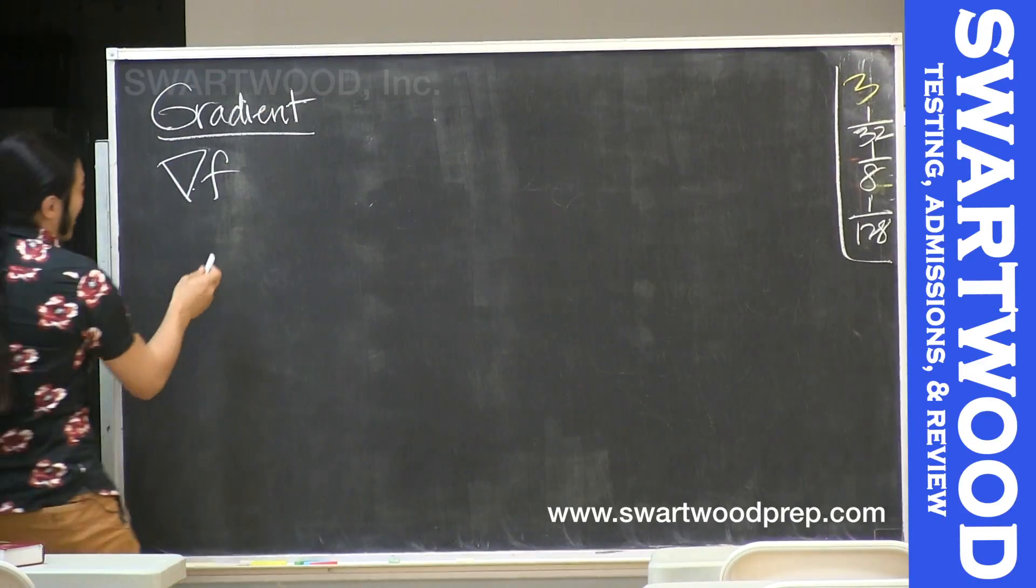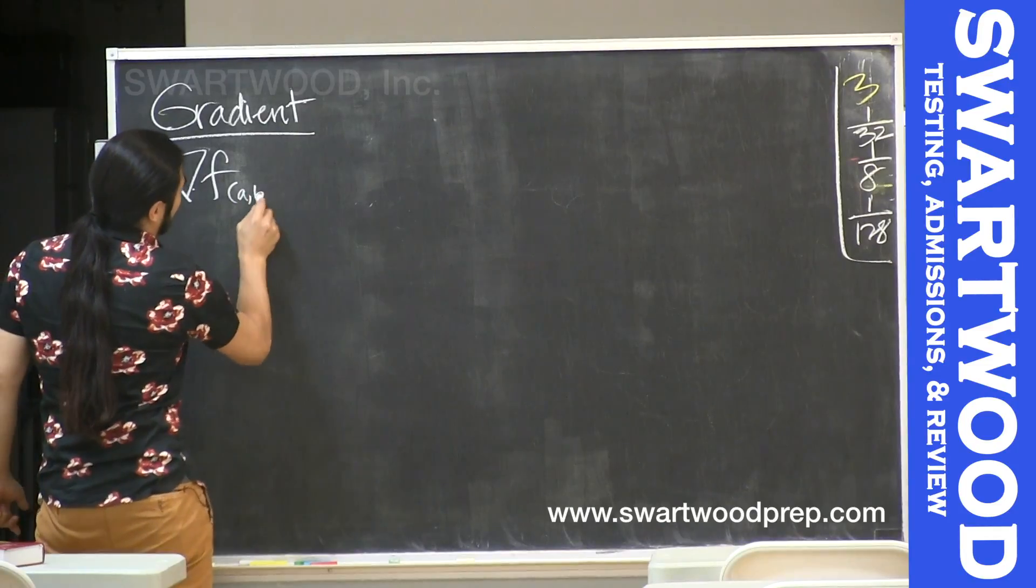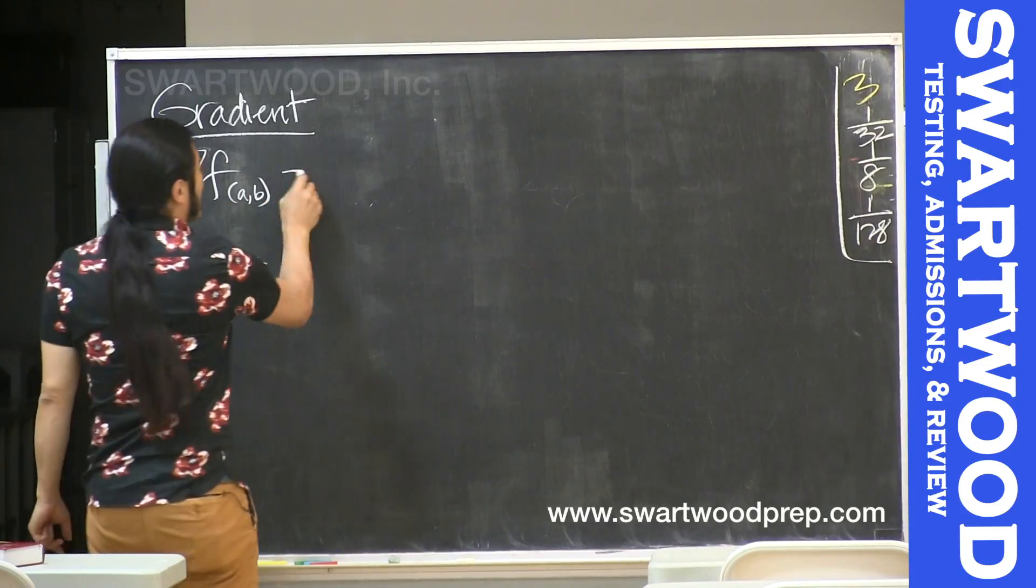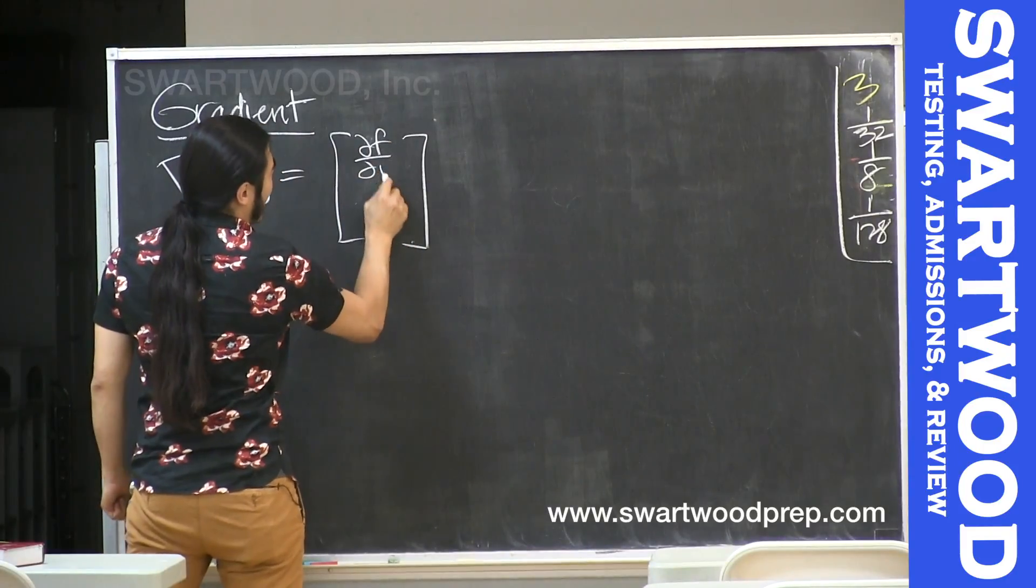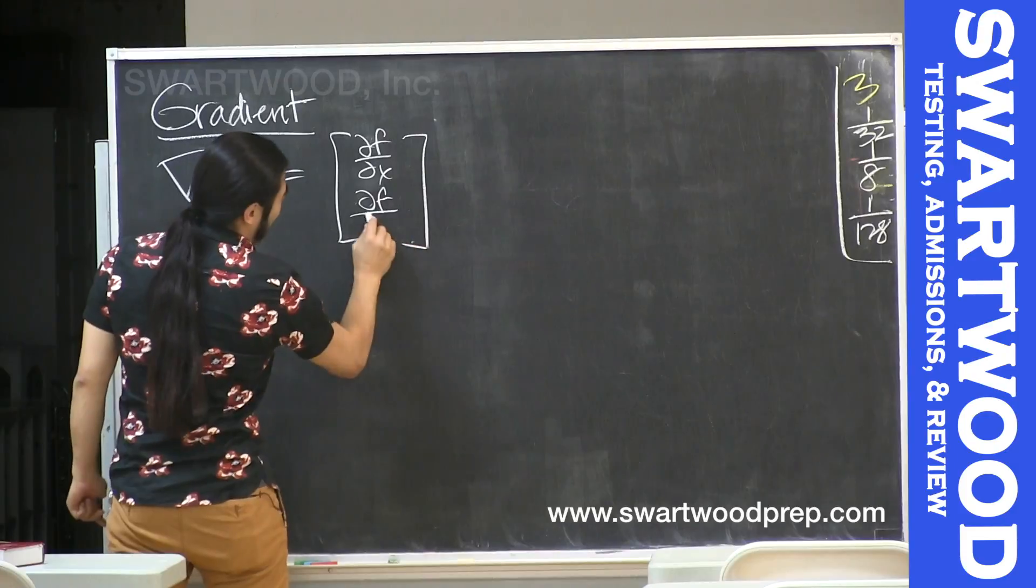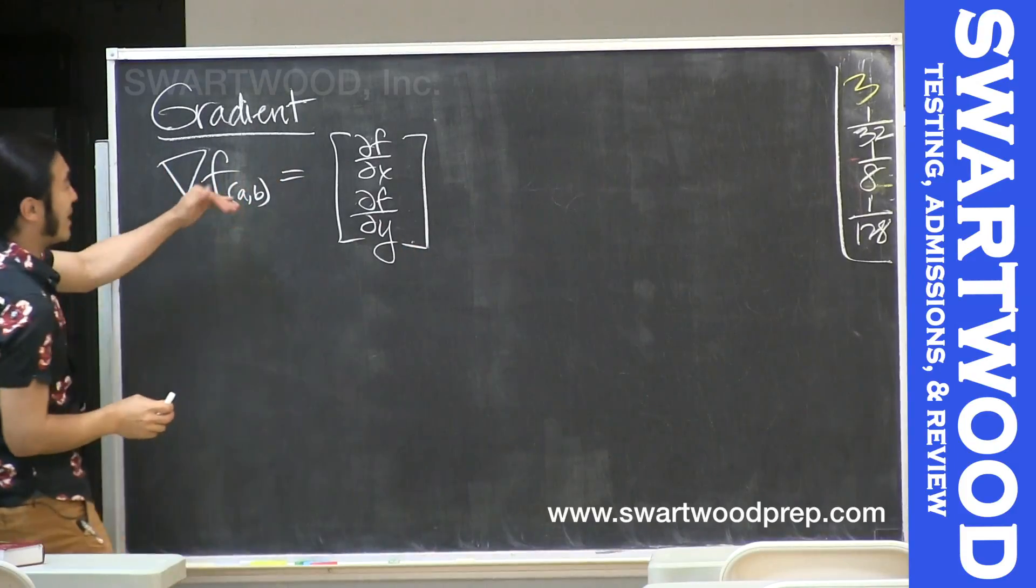When we talk about the gradient of f at a point, say AB, we're looking at this vector that we're creating, where the first component is the partial of the function with respect to x, and the second component is the partial of the function with respect to y, evaluated at the point AB.